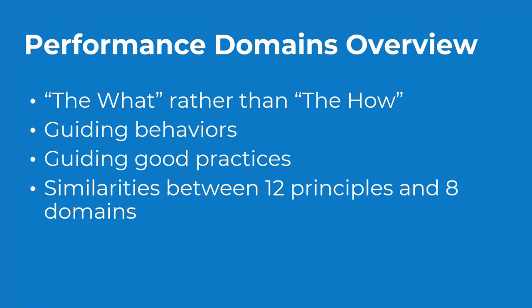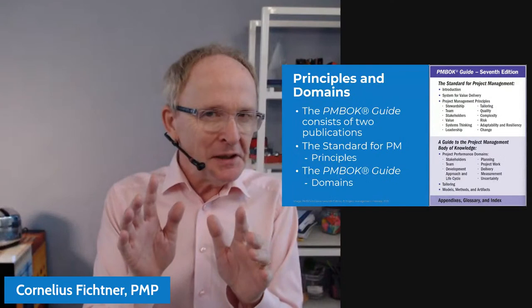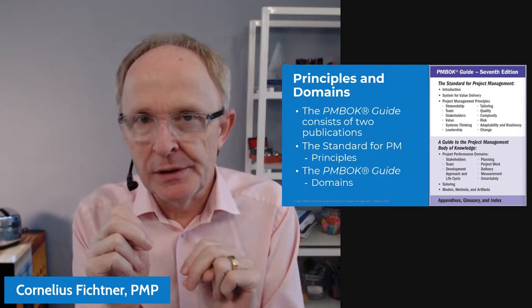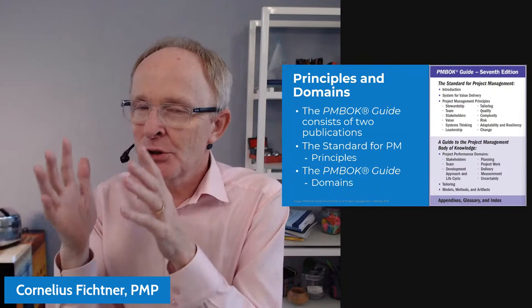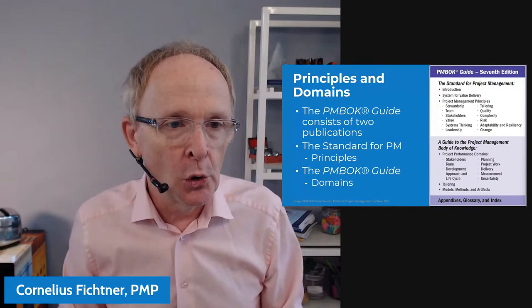You'll find some very noticeable similarities between the 12 principles and the eight domains, which serve to emphasize both their importance and relevance for successful project management. The PMBOK Guide is actually two documents: the ANSI standard in part one and the PMBOK Guide in part two. So the whole thing we call the PMBOK Guide, but the PMBOK Guide is really only part two of the document that we all know so well.